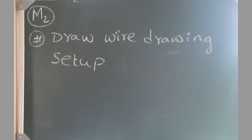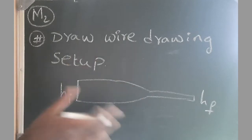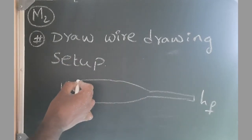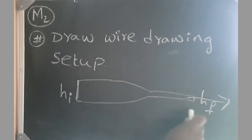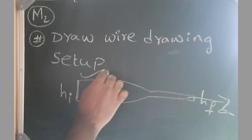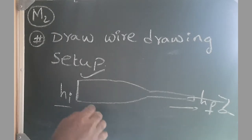After that he asked me another question, draw wire drawing setup. So I did not draw the die arrangement and all. The initial height is h1, final height is h2, so this is the draw head and we pull from this direction. So the question is, this is comparatively smaller cross section than this, right? Initial cross section is very high, so you are pulling a small cross section and it is a big cross section. Material should fail in this region.